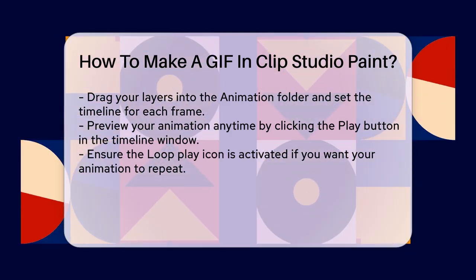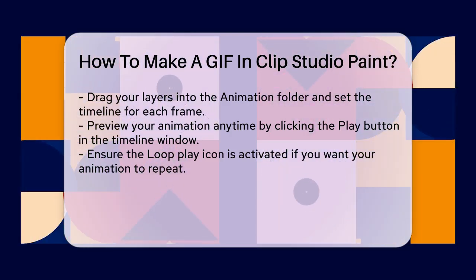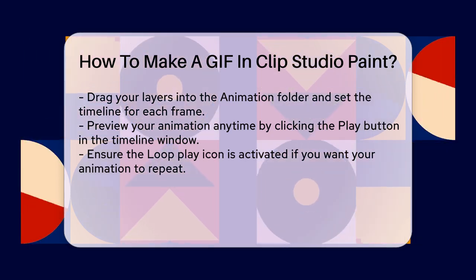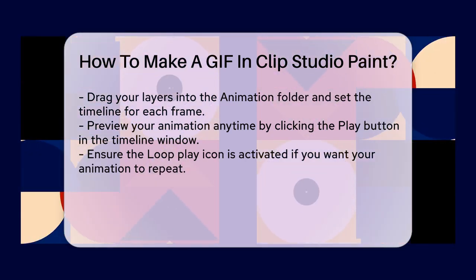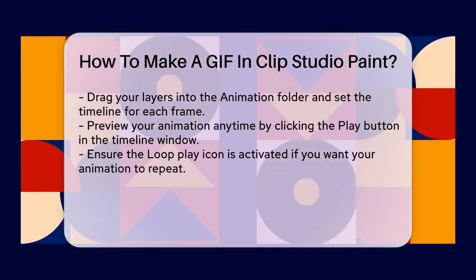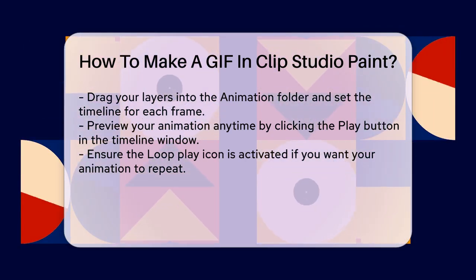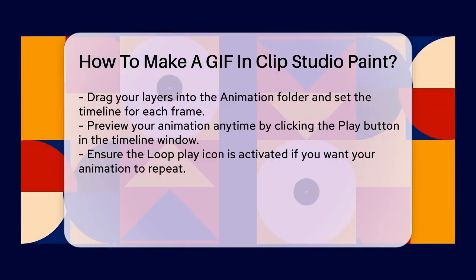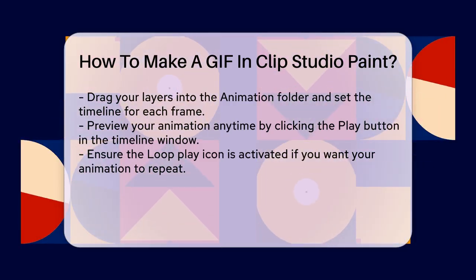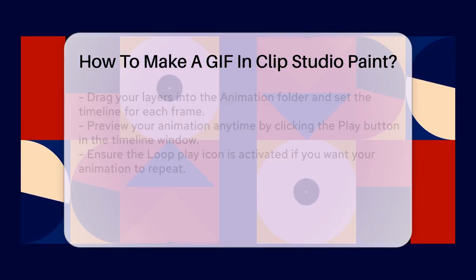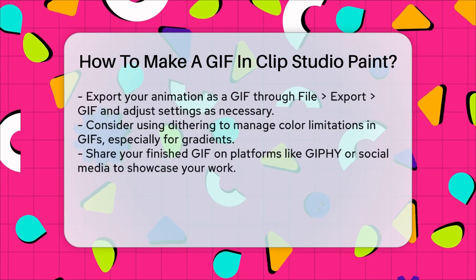When setting up your animation, you can preview it at any time by clicking the play button in the timeline window. This helps you check the motion and make any necessary adjustments. If you want the animation to loop, make sure the loop play icon is clicked.